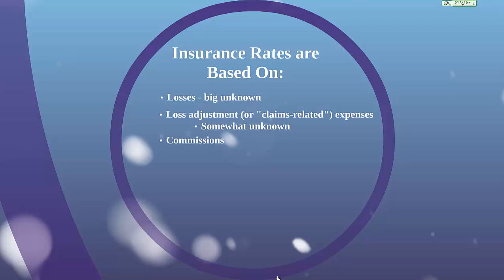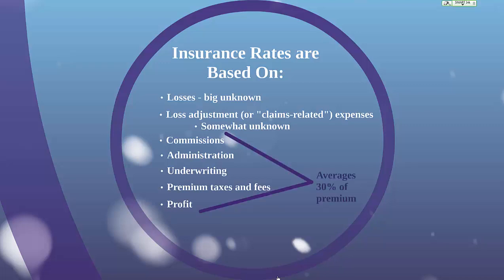Additionally, insurance rates are based on commissions, typically set as a percentage of the insurance premium, as well as administration costs and underwriting costs — the cost of paying the underwriter, collecting data, and other administrative costs. Next, premium taxes and fees that go generally to the state government. And profits, which generally average 30% of the total premium. Finally, investment earnings — at least in property and liability — are not directly considered as part of the rate charged, but they are considered by the insurance company. Sometimes insurance rates are actually set to lose money in underwriting, with insurers paying out more in losses and loss adjustment expenses than they take in premiums, but the investment earnings on money held until losses are paid makes up for that difference.